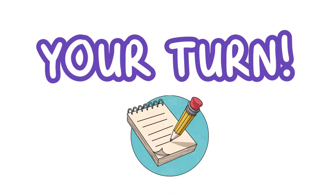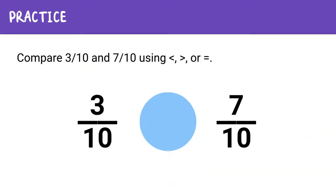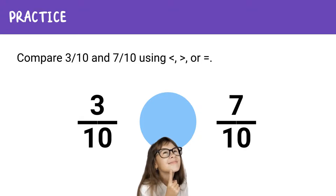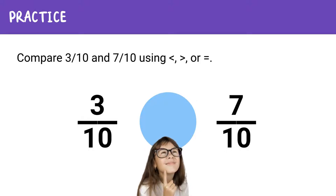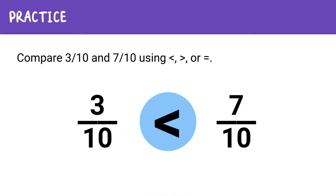Now let's practice. Compare these fractions — 3 tenths and 7 tenths — using less than, greater than, or equal to. The answer is 3 tenths is less than 7 tenths because 3 is smaller than 7. Since both fractions have the same denominator, you can simply compare the numerators to determine which fraction is greater and which is smaller. Easy, right?